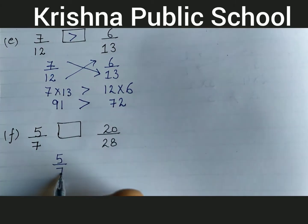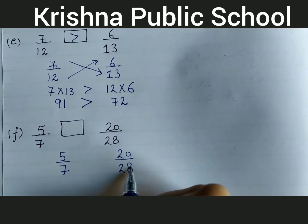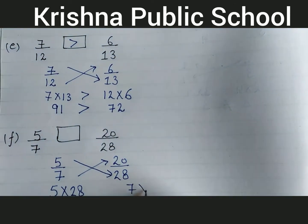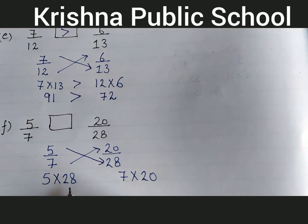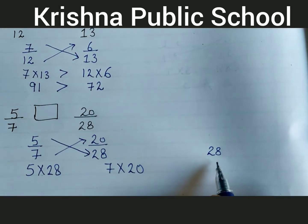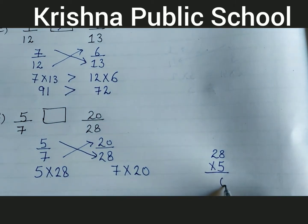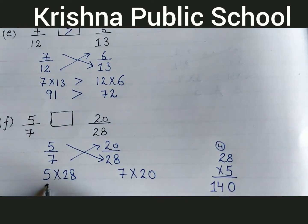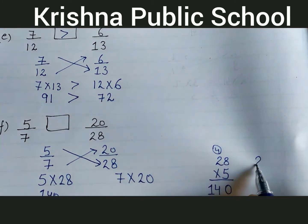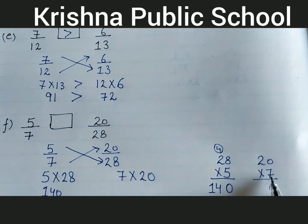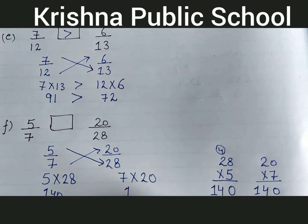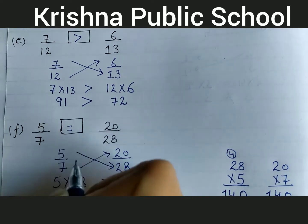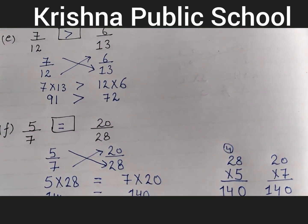Next question: compare 5 upon 7 and 20 upon 28. By cross multiplication: 5 multiply 28 and 7 multiply 20. 5 multiply 28: 5 times 8 is 40, write 0, carry 4; 5 times 2 is 10, add 4, equals 14. So 5 multiply 28 equal to 140. 7 multiply 20: 7 times 0 is 0, 7 times 2 is 14, answer is 140. Both are equal, so 5 upon 7 is equal to 20 upon 28.